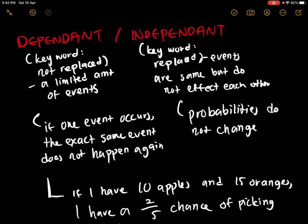For dependent and independent events — independent is the easier one. If you perform a certain event multiple times, the outcomes do not affect each other. For example, if you flip a coin and want to know the probability of getting 2 heads, it would be 1 over 2 times 1 over 2, because after you get that 1 over 2 chance of getting heads, you'll have another 1 over 2 chance of getting heads again. So you have a 1 over 4 chance of getting heads twice.